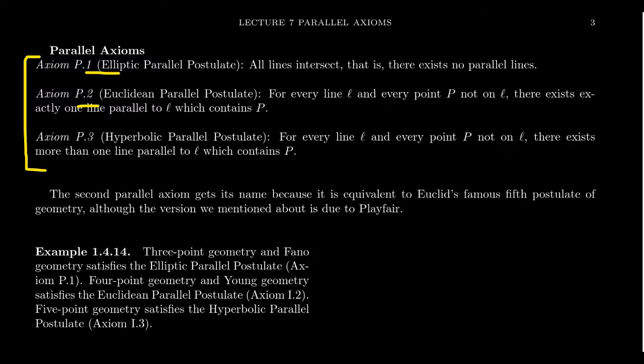In axiomatic theory, the words axiom and postulate are really synonyms of each other — you can use them interchangeably. But when one talks about parallel alternatives, the word postulate is typically used more than the word axiom.